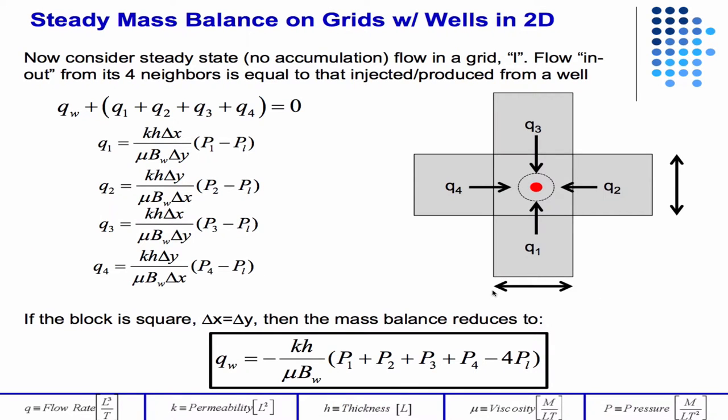The average pressure in the grid block is PL. That's the unknown we want to solve for. And so then we can build a well model. If we evaluate that at REQ, then we have PL. The problem is, we know the radius of the well. If it's constant bottom hole pressure well, we know PWFL, but we don't know REQ. So we need some more information to solve this problem.